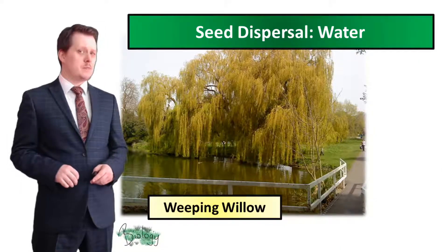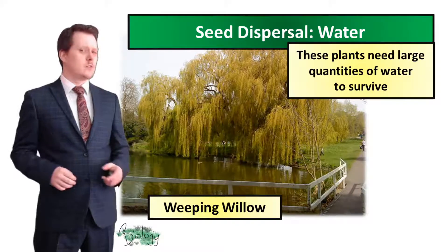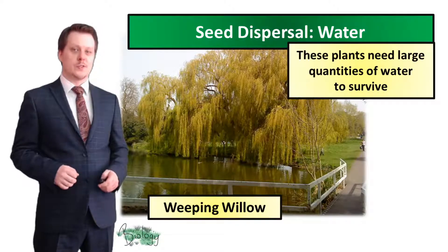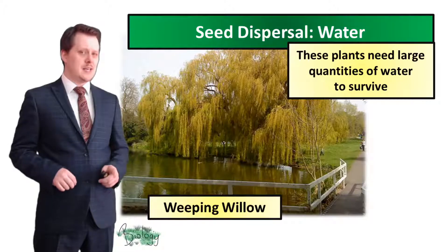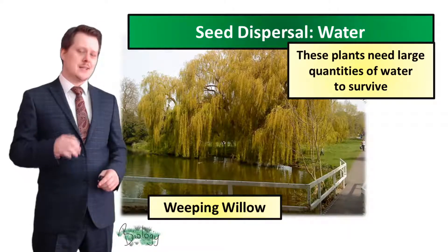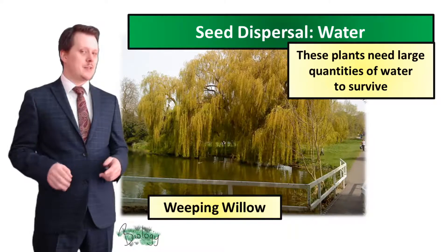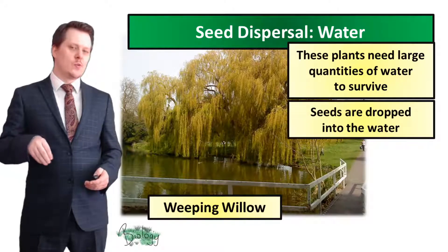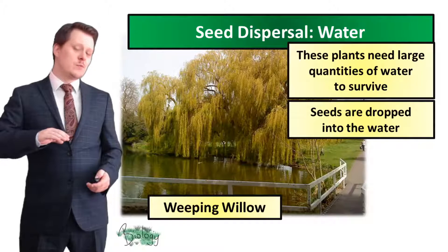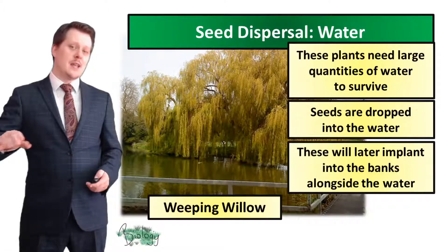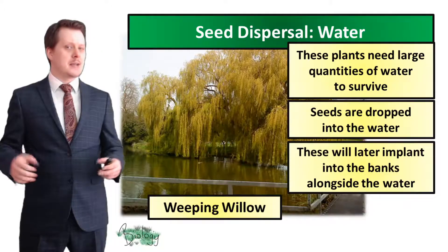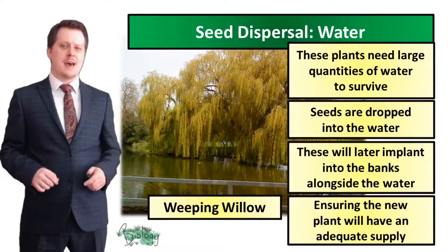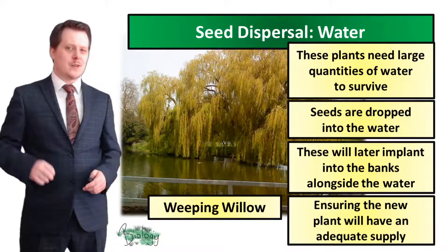Seeds can also be dispersed by water. This is beneficial because these are often plants that need a large quantity of water to survive. So if that seed is dispersed by running water it's likely to end up in a place where it has lots of access to water. The seed will be dropped into the water by the plant and then the stream will take it away to be implanted into the banks alongside the water, making sure our plant has an adequate supply of water so it can thrive.